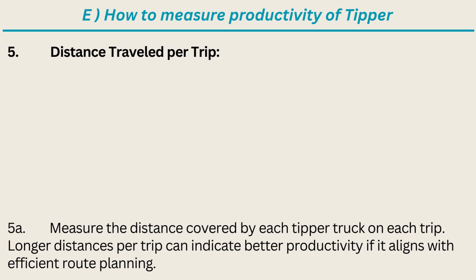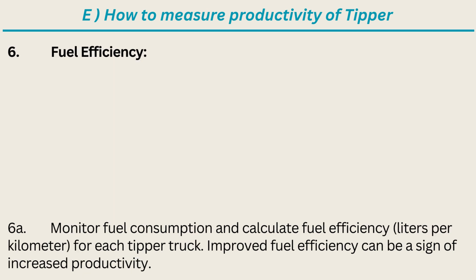5. Distance Traveled per Trip: measure the distance covered by each tipper truck on each trip. Longer distances per trip can indicate better productivity if it aligns with efficient route planning.